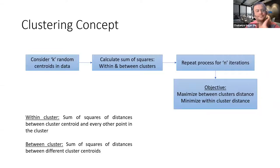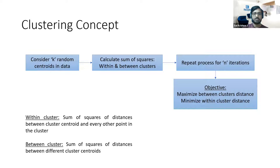In the k-means clustering algorithm, the algorithm considers k random centroids in the data. This k is something you specify — we'll talk about how to determine that value. We consider k random centroids and then calculate a metric called the sum of squares.